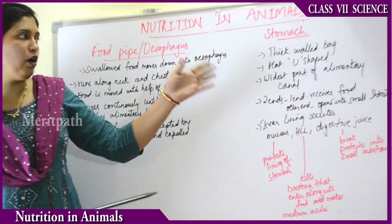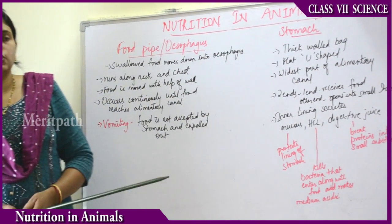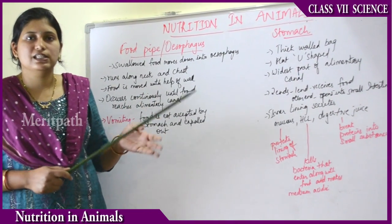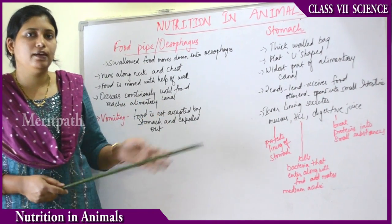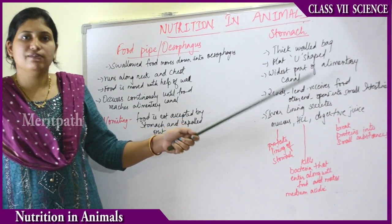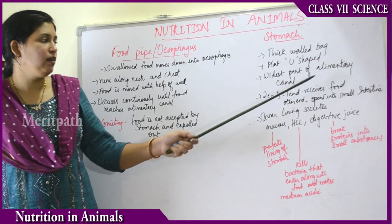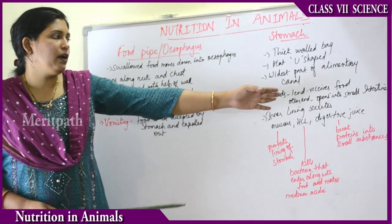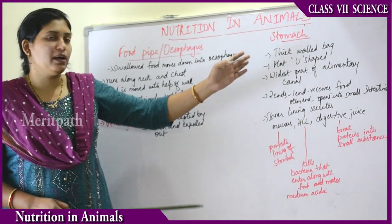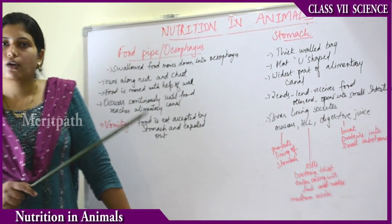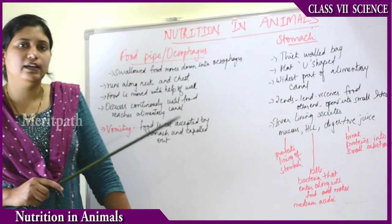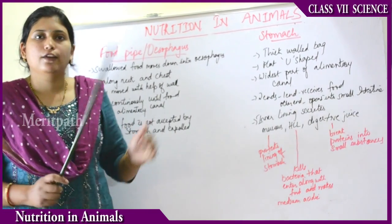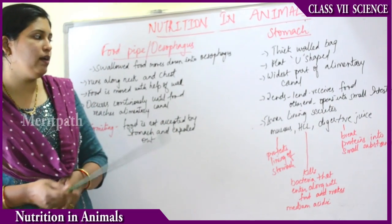From the esophagus, food moves further down into the stomach. The stomach is a thick-walled, bag-like, U-shaped structure and is the widest part of the alimentary canal. The small intestine and stomach together make up the alimentary canal. The stomach has two ends: the first end receives food from the esophagus, and the other end opens into the small intestine, moving food further along.